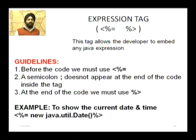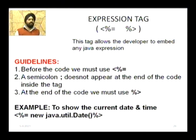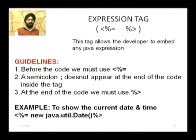There is an example available on your screen. If I have a current date and time to print, I will use an expression tag. The syntax is: less-than sign, modulus, equal-to sign, then the 'new' operator — which is basically for initializing an object — then java.util.Date. 'java.util' is the package and 'Date' is the function that will print the current system date with time.